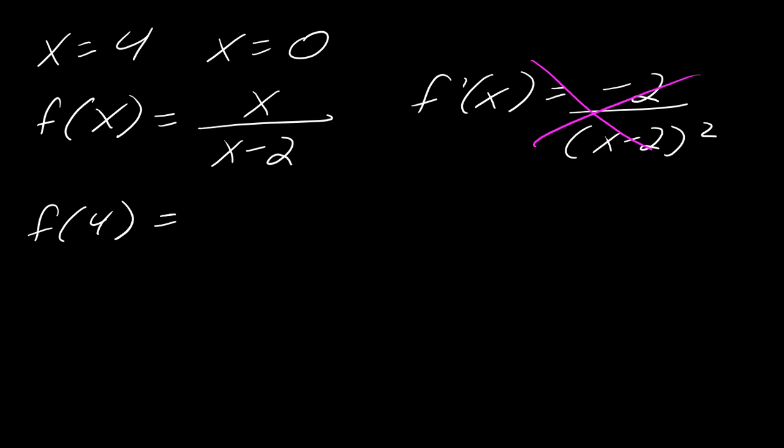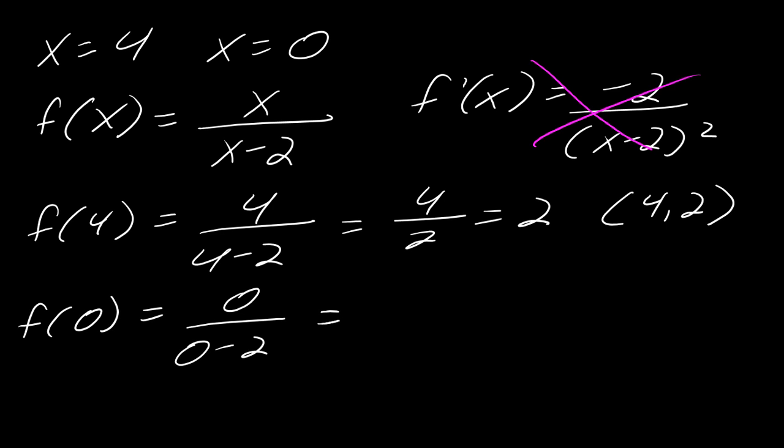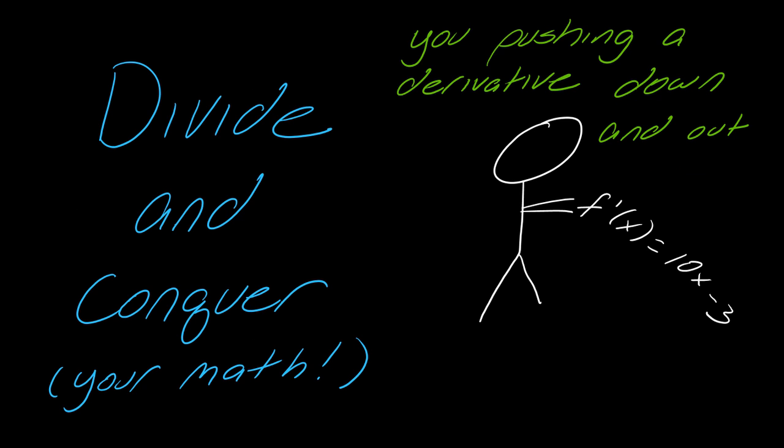So to finish this, I'm going to just plug in these numbers. So this will be 4 over 4 minus 2, so 4 over 2, so this will be 2. So this is the point (4, 2). And then for f of 0, this gives me 0 over 0 minus 2, so this just equals 0. So this is the point (0, 0). And so these two points are my answers.